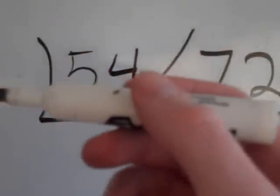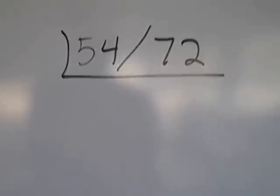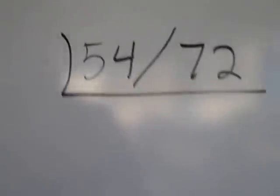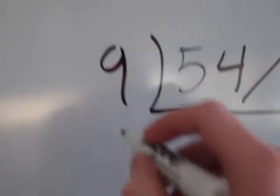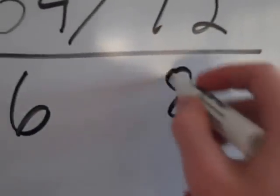And I'm going to divide this down until I can't divide it anymore. So 54 divided, let's see, 54 and 72, what can I divide both of those by? How about, wait a minute, doesn't 9 go into both of these? I'll start there, because 9 times 6 is 54 and 9 times 8 is 72.